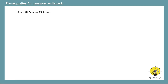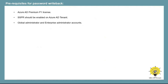The prerequisites for password writeback are: you need an Azure Active Directory Premium P1 license; self-service password reset must be enabled in your tenant; you need a Global Administrator account for your Azure AD tenant; you need an on-premise Active Directory Enterprise Administrator account; and you need Azure AD Connect installed on-premise with the latest version.